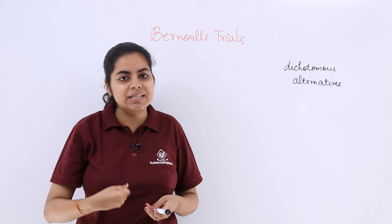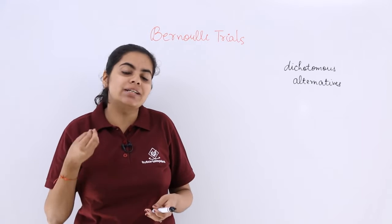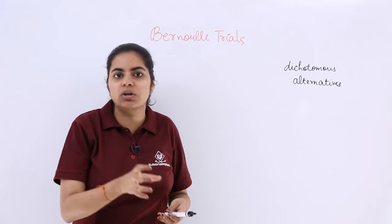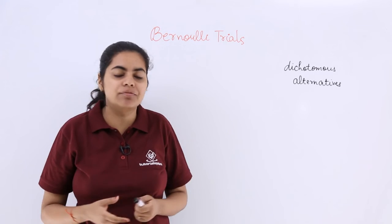That means if I say the tossing of a coin, if I say the manufacturing of a product, the coin that is tossed may either result in a head or a tail. So what is favorable? Suppose head is favorable to us then tail is considered as a failure.